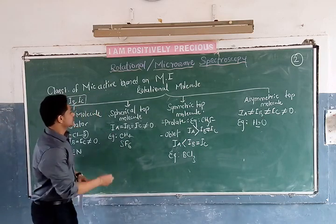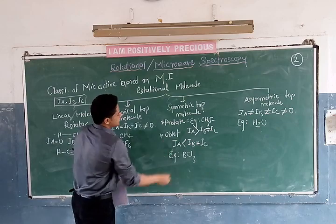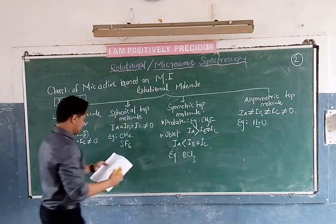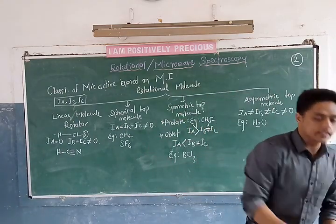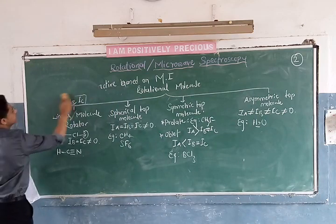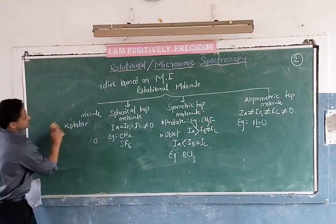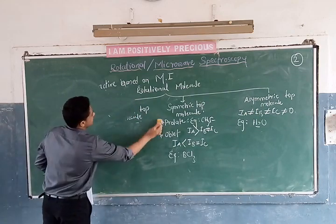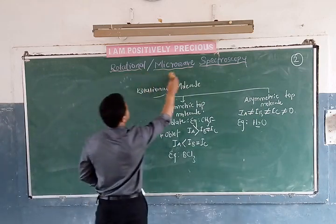These should be remembered — prolate type, oblate type — which are asked in exams. Further, I am going to derive an expression for the rigid rotator. For BSc students, we have to derive an expression for energy in terms of wave number for the rigid rotator.